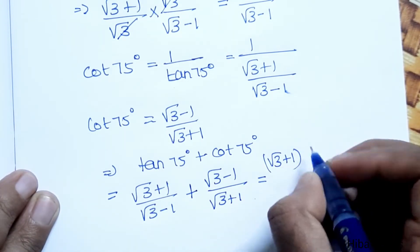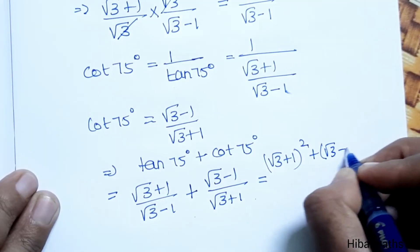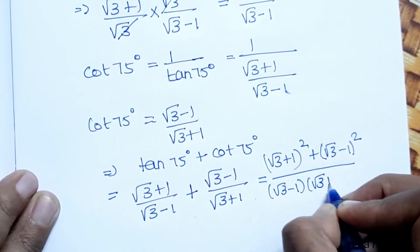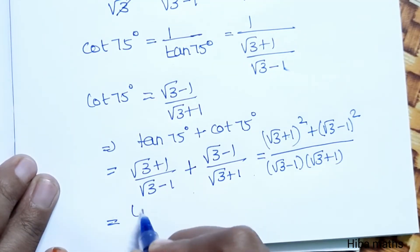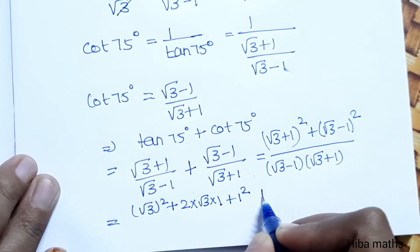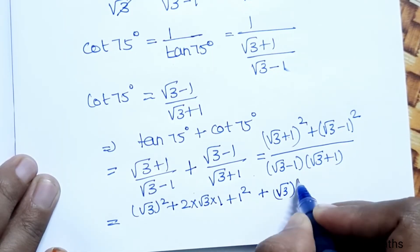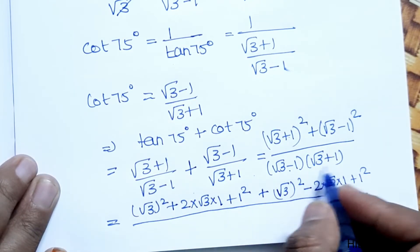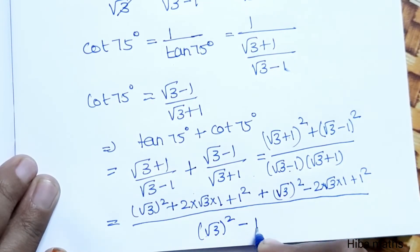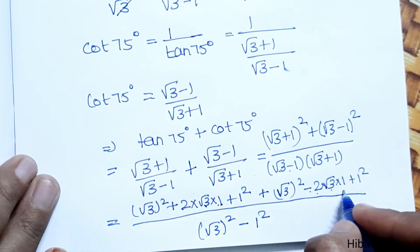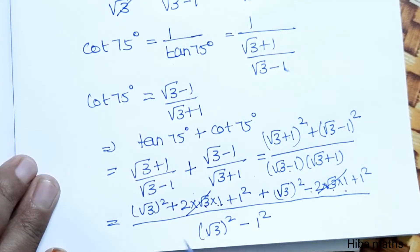Now for tan 75° + cot 75°, we use (a + b)² = a² + 2ab + b² and (a − b)² = a² − 2ab + b², divided by (a − b)(a + b) = a² − b². In the numerator, the +2√3·1 and −2√3·1 terms cancel each other out.